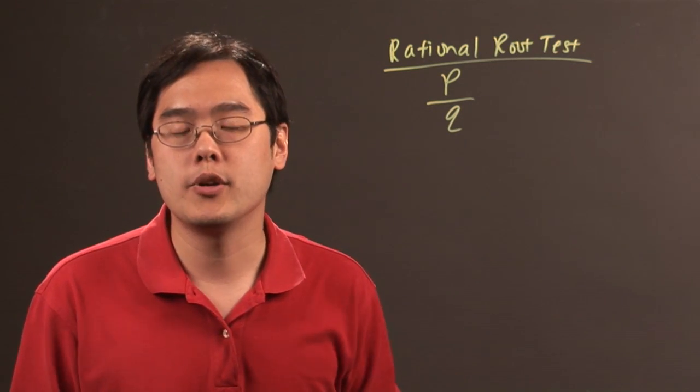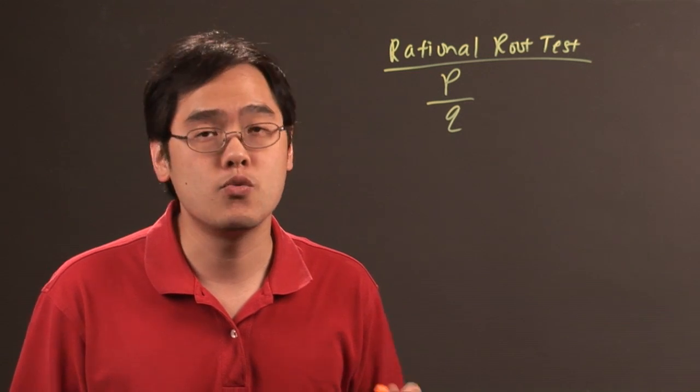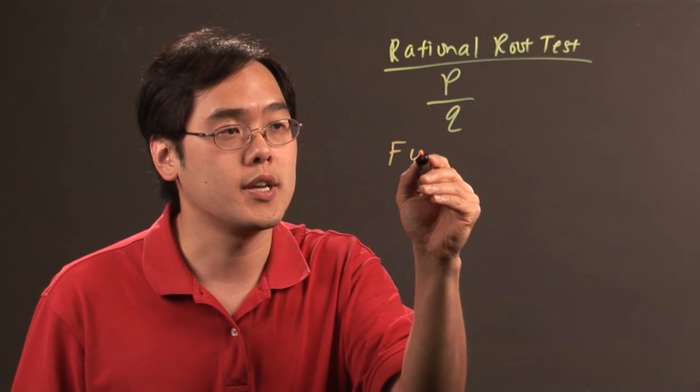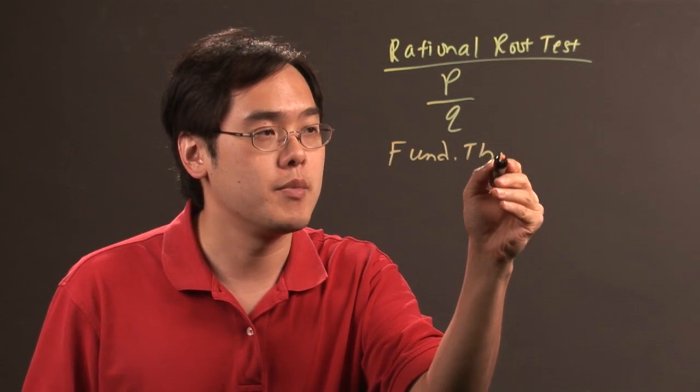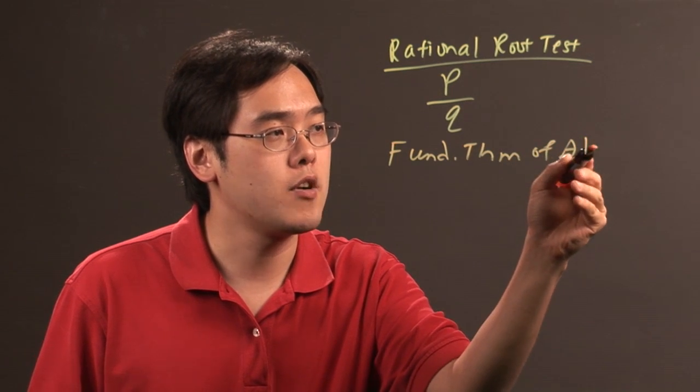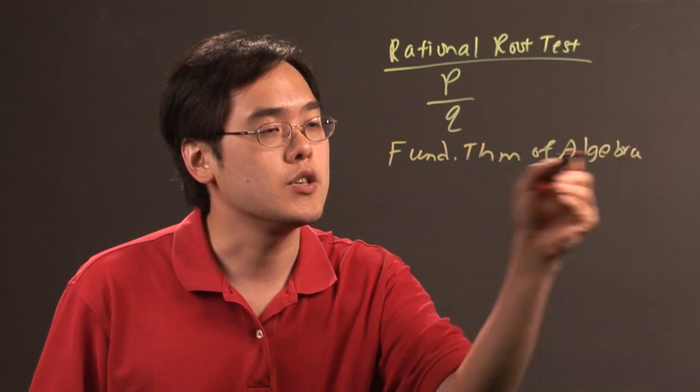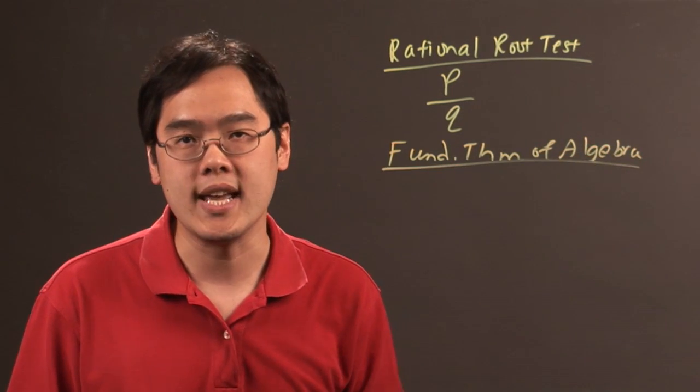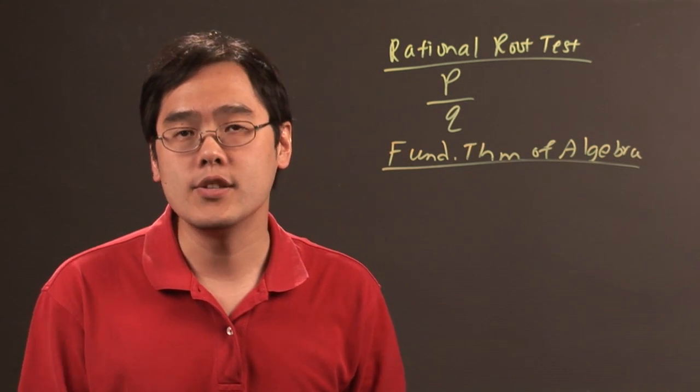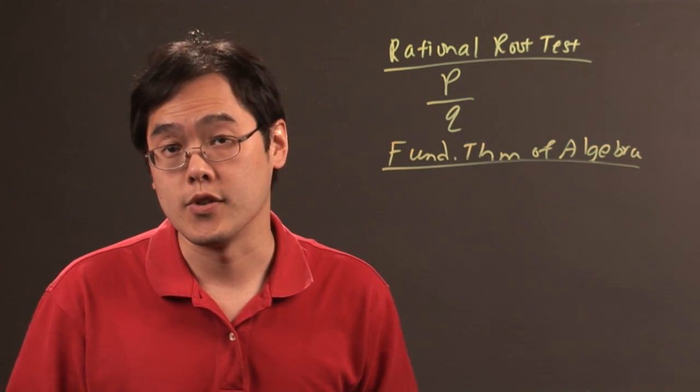Now to be able to write a polynomial as a product of irreducible polynomials, you really want to consider, among other things, the fundamental theorem of algebra. And what that theorem tells you is that every polynomial of degree n is going to have n solutions, or n zeros.